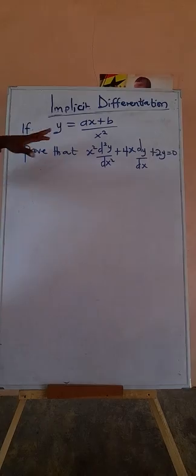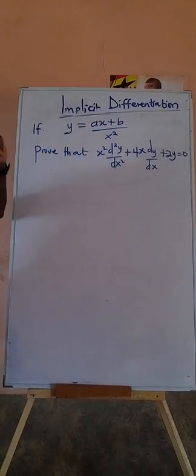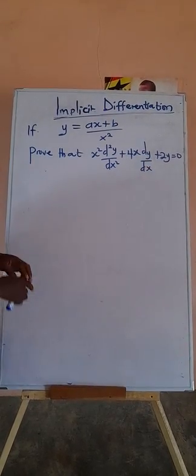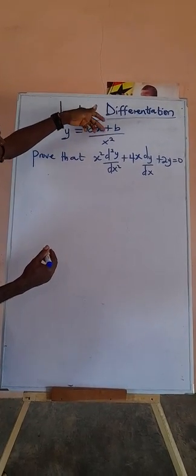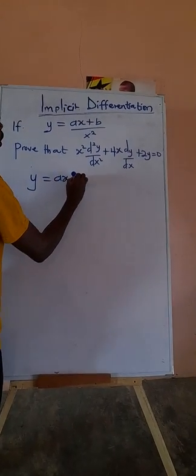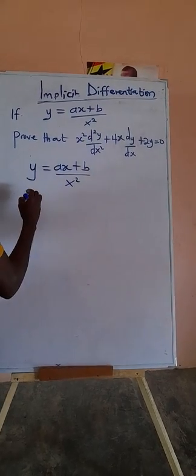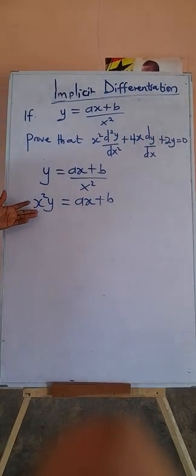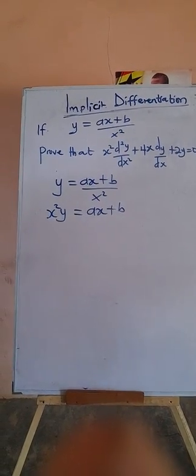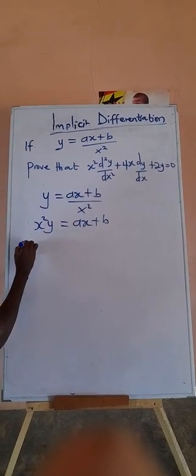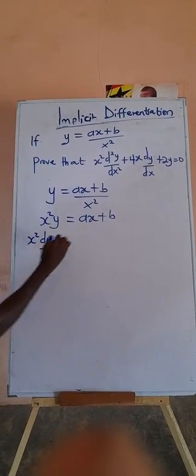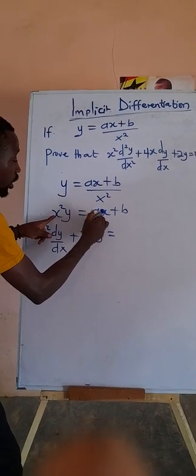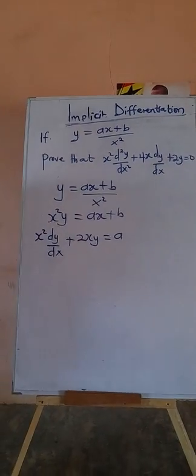This is an assignment a friend sent to me. If y equals (ax plus b) over x squared, prove that x squared d²y/dx² plus 4x dy/dx plus 2y equals 0. We'll use implicit differentiation — don't try to use the quotient rule; it won't work. We multiply both sides by x squared to get x squared y equals ax plus b. This becomes a product, so we use the product rule. We keep x squared and differentiate y to get x squared dy/dx, plus we keep y and differentiate x squared to get 2xy. The right side differentiates to a, and the constant b gives 0. That's the first derivative.